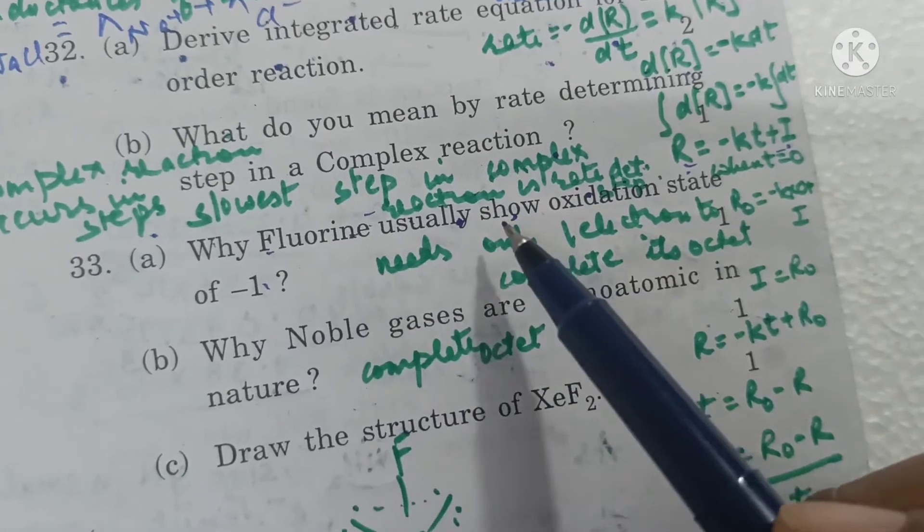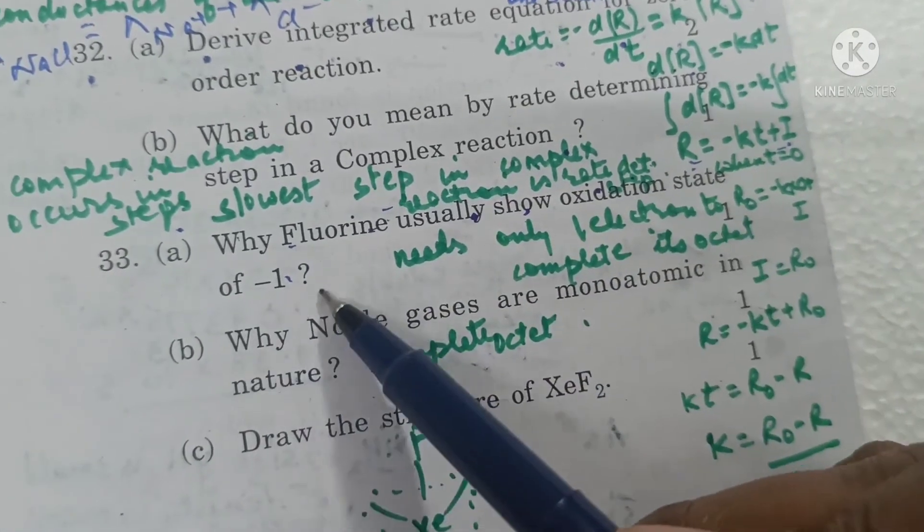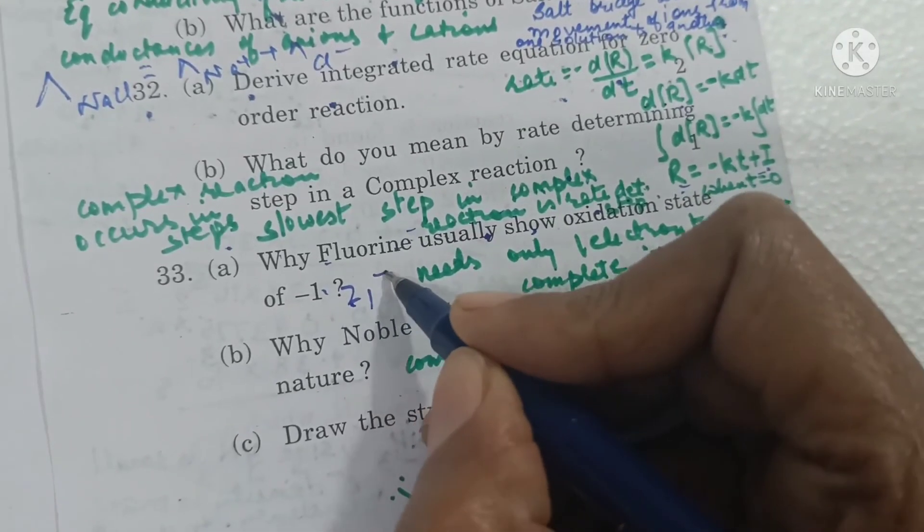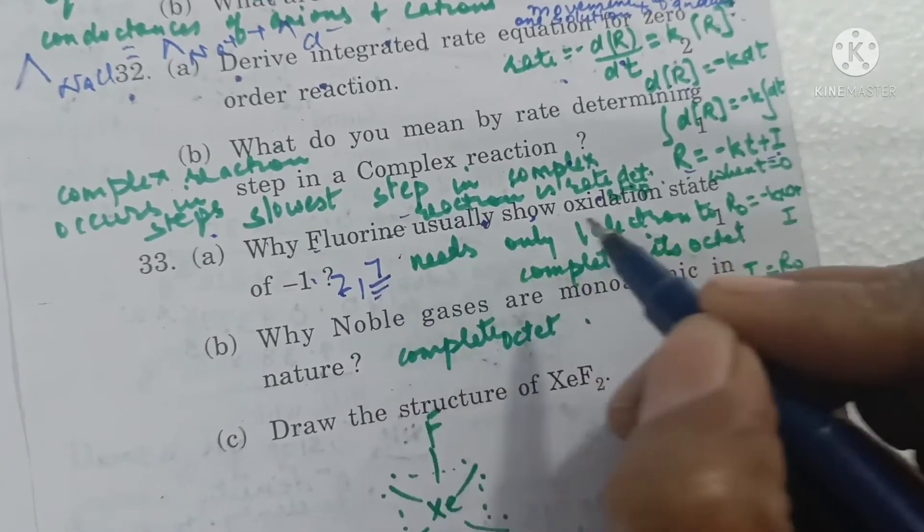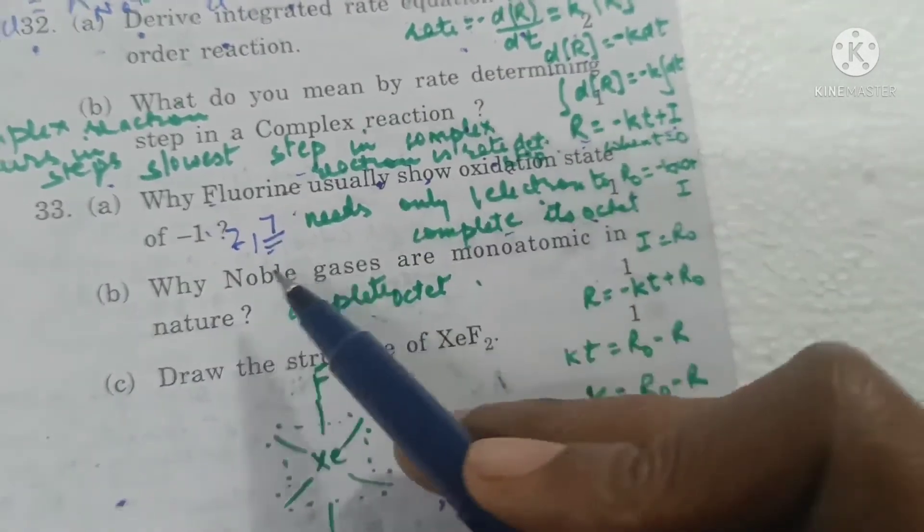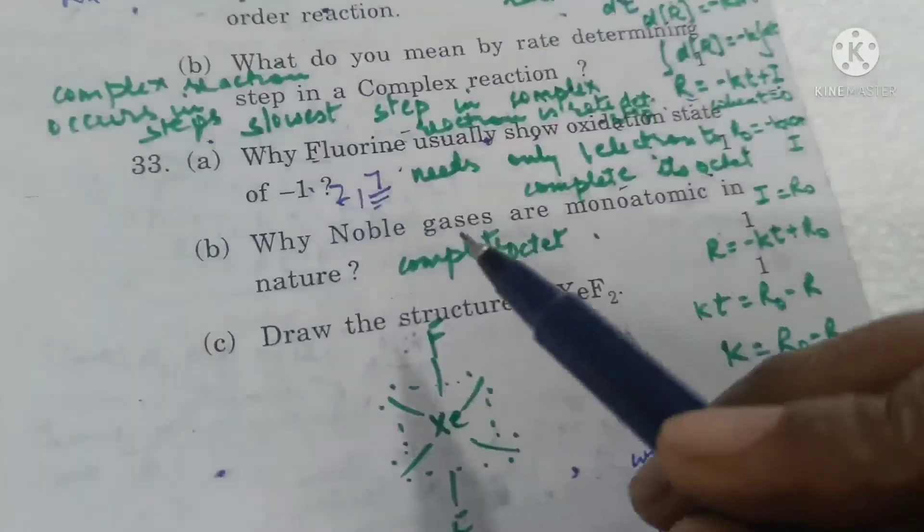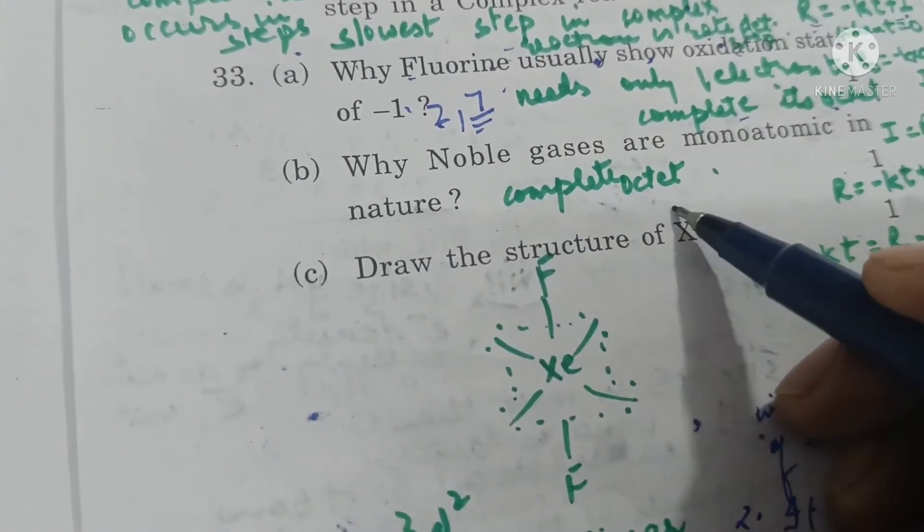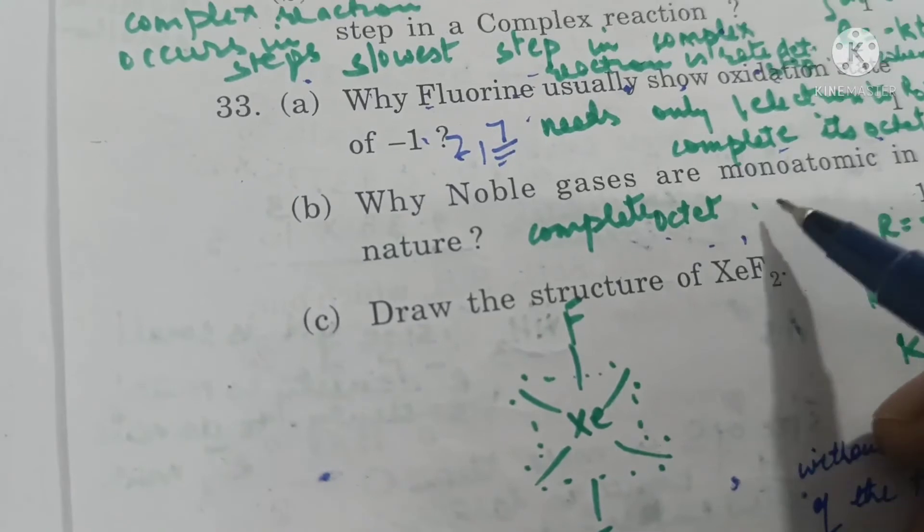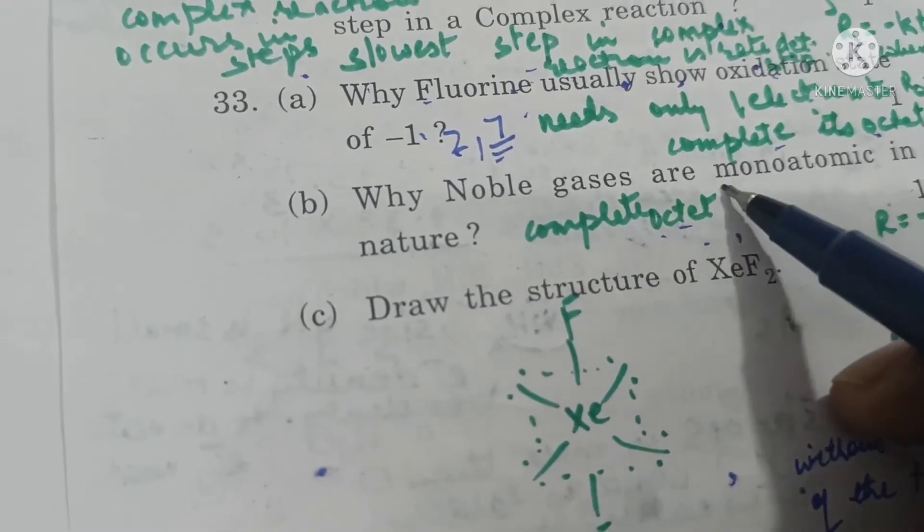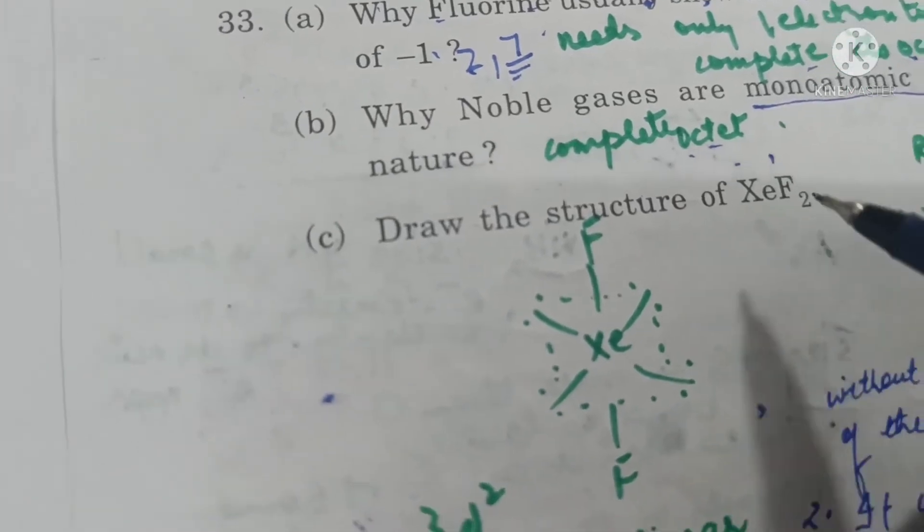Why fluorine usually shows oxidation state of minus 1? Because fluorine has 7 electrons in its outermost orbit and needs only 1 electron to complete its octet, so it shows oxidation state of minus 1. Why noble gases are monoatomic in nature? Because they have complete octet and there is no need to form bond with any other atom, so it is monoatomic in nature.